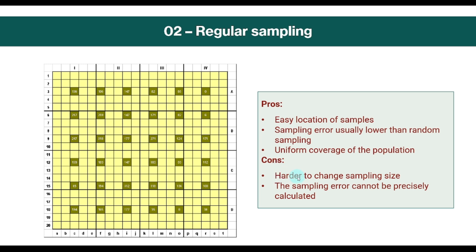The cons of regular sampling are that it's harder to change the sampling size. If we already started to do these samples, it would be harder to add more, because adding samples in the middle would destroy the sense of the regular sampling. The other con is that the sampling error cannot be precisely calculated.